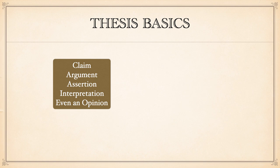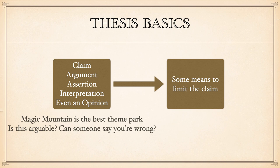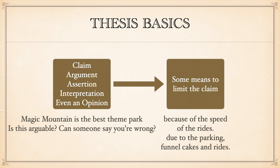It's not enough to say Magic Mountain is the best theme park in America, because with that premise alone I'd end up writing a thousand pages. So I need to add a limiting statement. Is 'Magic Mountain is the best theme park in America' arguable? Yes. Now I need to limit it — I'll talk only about the speed of the rides. I won't talk about funnel cakes or shows, just the speed of the rides, and that I can manage in four to six pages.